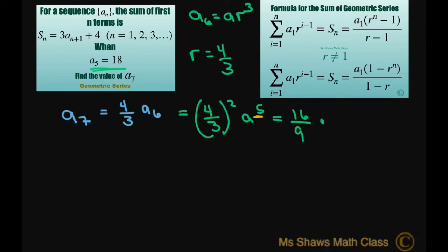So when you square this, you get 16 divided by 9. A sub 5 is 18, and this is going to equal 32.